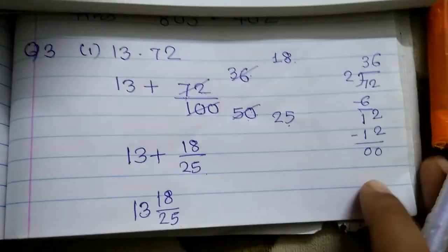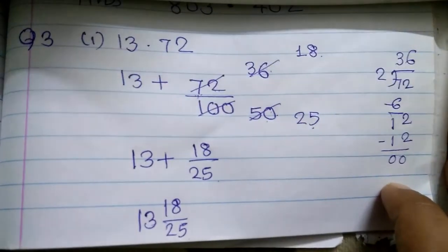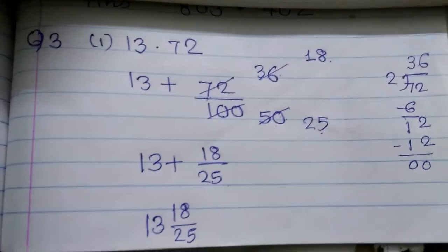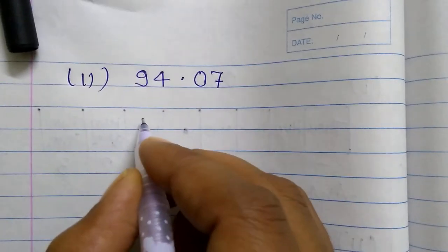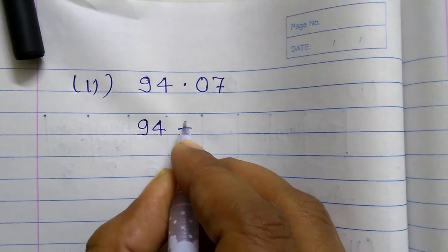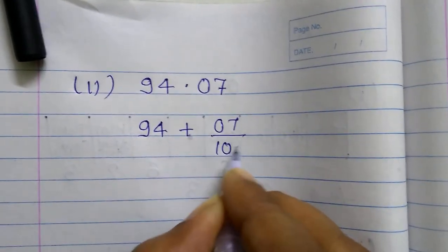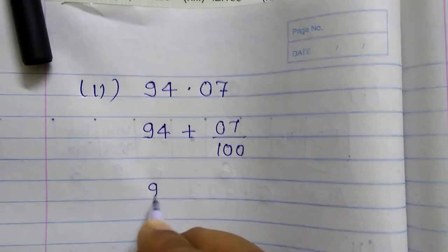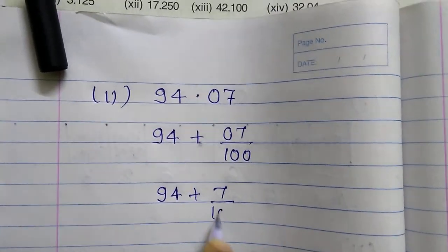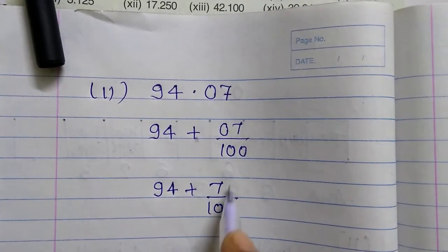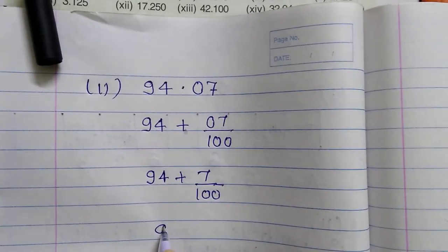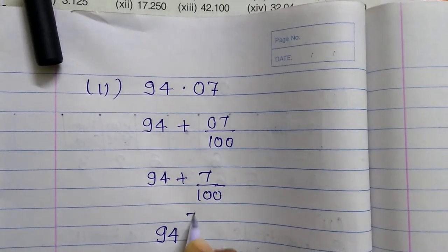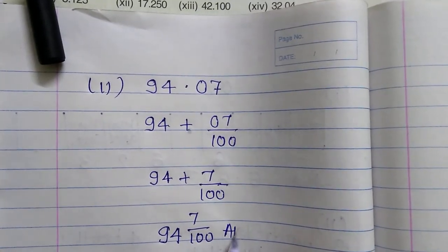The second question is 94.07. We break it into 94 plus 07/100, which is 7/100. Since 7 and 100 share no common factor, it cannot be simplified. So the required answer is the mixed number 94 and 7/100.